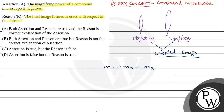We see that the magnifying power of the objective is negative and the magnifying power of the eyepiece is also negative. So the magnifying power of the compound microscope is negative — therefore the assertion is right.